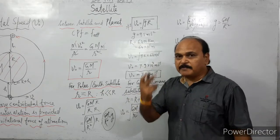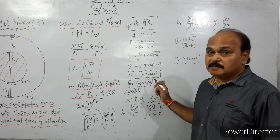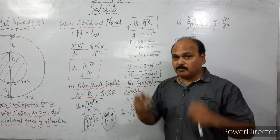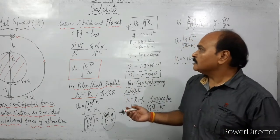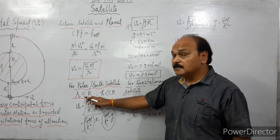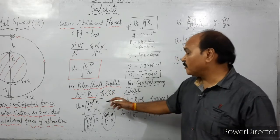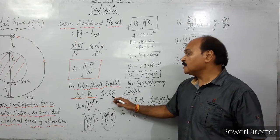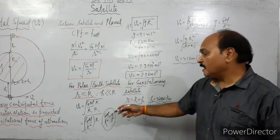There are two types of satellites: polar satellites and geostationary satellites. Polar satellites, or Earth satellites, are those satellites which are very close to the Earth's surface. For these satellites, r is nearly equal to the radius of the planet, because h is much smaller than R.